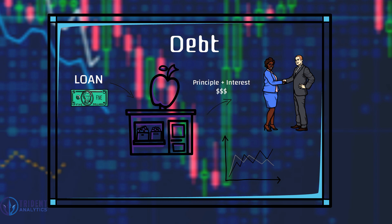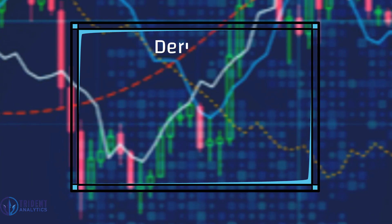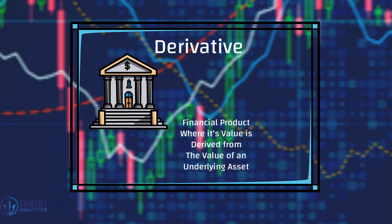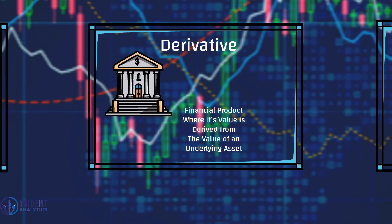There is also a third category which we call derivatives. A derivative is a financial product where the value of the product is dependent on, or derived from, the value of the underlying asset.